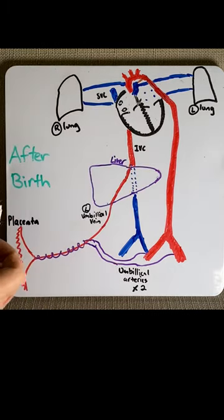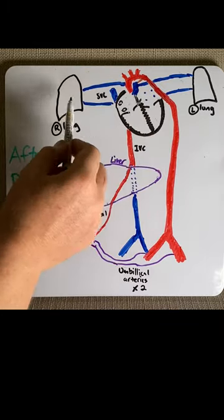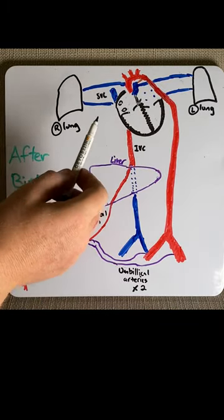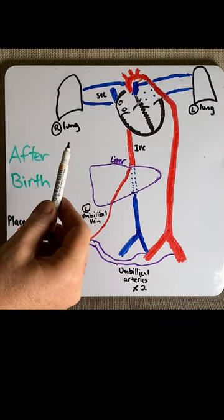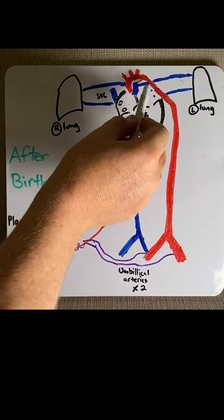The remnants of this flap are known in the adult as the fossa ovale. Now, because the lungs are now active, the blood is at a higher oxygenation. Because the left side of the heart is under higher pressure, the pressure in the aorta is higher.